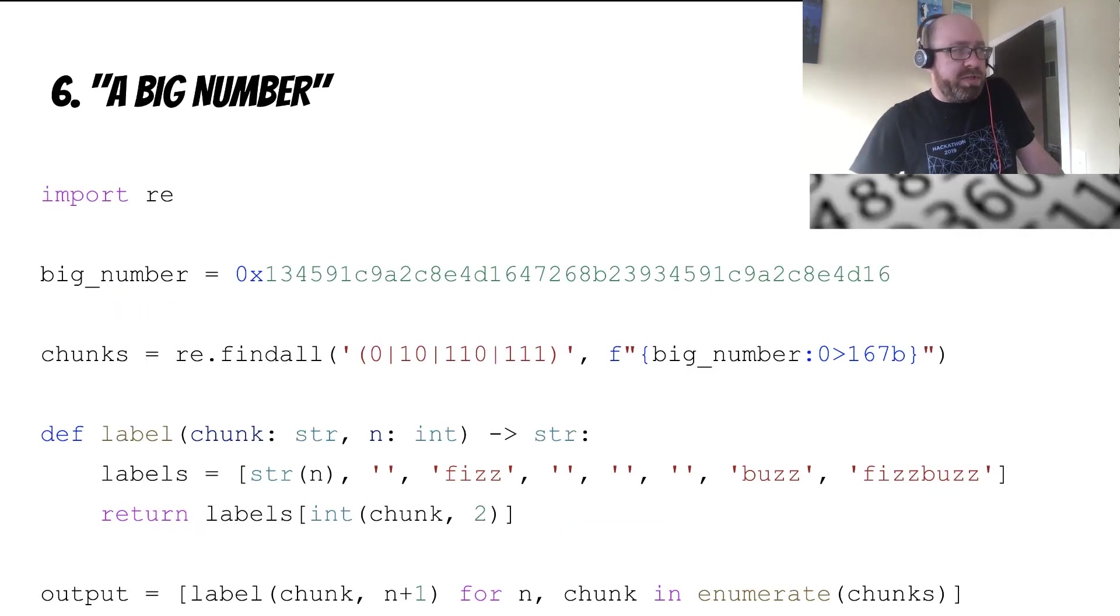This sixth solution involves a big number. This one is definitely the most opaque of all the solutions, and there's actually quite a bit going on here. But I promise you, this works. And if you spend some time studying it, you can understand how it works and why it works. It's sort of interesting, sort of not, up to you.